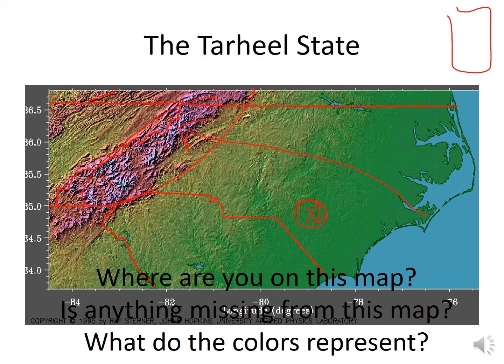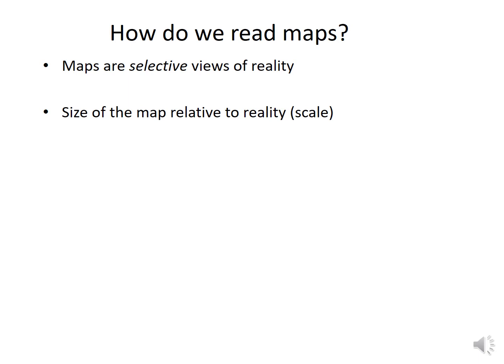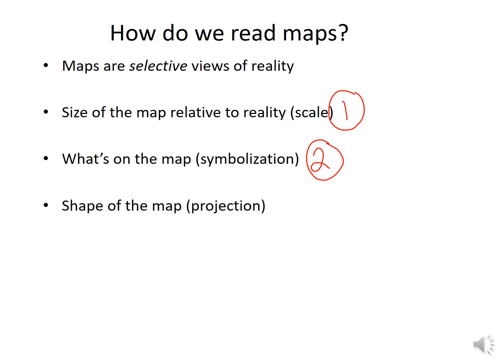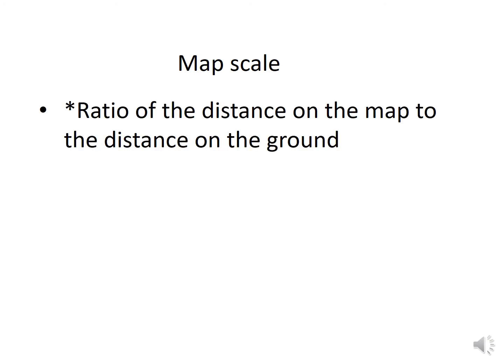How do we read maps? Maps are selective views of reality. The first thing is the size of the map relative to reality — that's the scale. Second, we look at what's on the map — the symbols, or symbolization. Then the shape of the map, because every shape gives us a different projection.